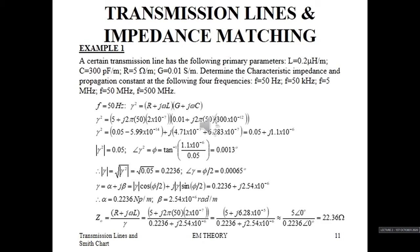Z₀ is the square root of (R + jωL) over (G + jωC), which can also be stated as (R + jωL) divided by gamma, since gamma is already known. Using this expression, we only need to calculate R + jωL. Therefore, Z₀ equals 22.36 ohms at 50 Hz.